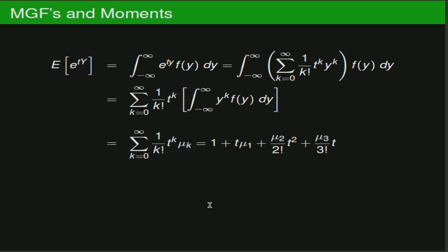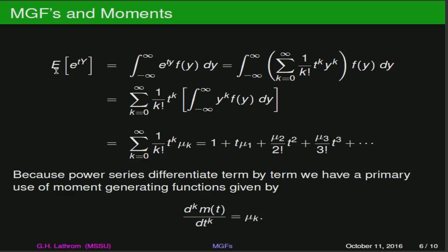If we use that power series expansion in our definition of expected value, we've got the expected value of e to the ty as being the integral from minus infinity to infinity of e to the ty times f of y dy, where f of y is just the PDF for our distribution. If we substitute in the power series expansion for e to the ty and rearrange some terms — assuming some convergence properties so we can take the summation outside the integral sign — we get the sum of 1 over k factorial times t to the k times the integral from minus infinity to infinity of y to the k times f of y dy. This is exactly what we mean by the expected value of y to the k.